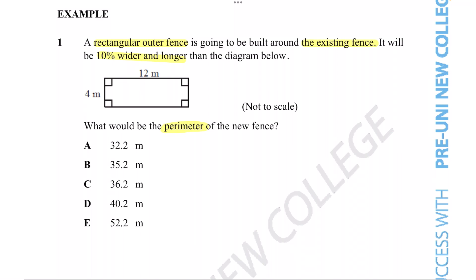To find the perimeter for a rectangle, we need to know the width and length of the fencing. In this case, the original fence is 12 meters in length and 4 meters in width, and that's just the original fence.